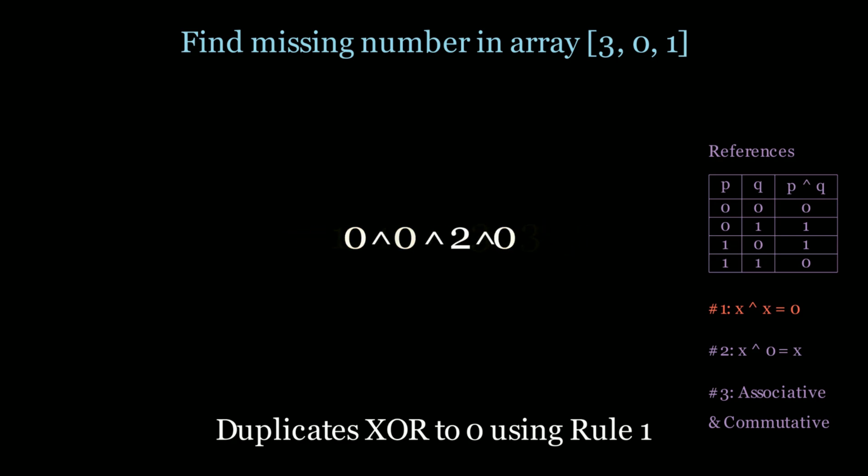And now what we're left with is 0 XOR 0, XOR 2 XOR 0. We're getting closer. And now let's use rule number 2. Anything XOR 0 is equal to itself. So 0 XOR 0 is equal to 0, 0 XOR 2 is equal to 2, and 2 XOR 0 is equal to 2.